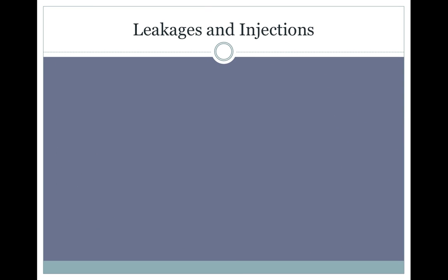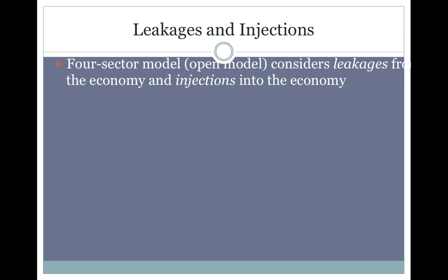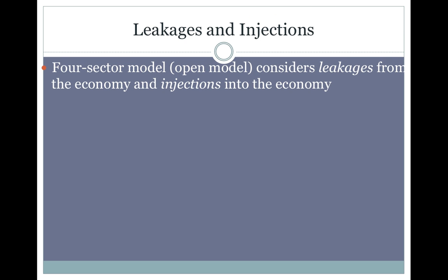We're going to go into more detail on leakages and injections. The initial closed model we looked at was too narrow a view. In reality, there is money that leaks out of an economy and other money that is injected into it. We need to understand why money leaks out and how it is injected back in — specifically the three ways money flows out and flows into an economy.